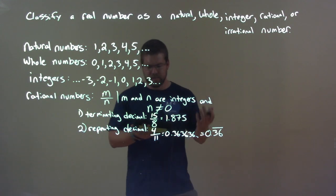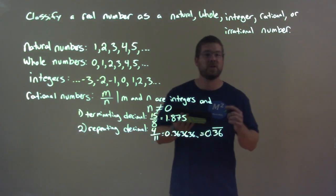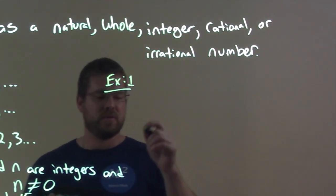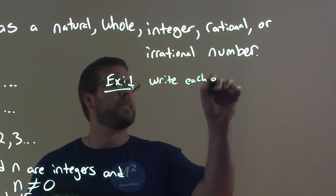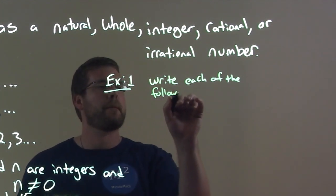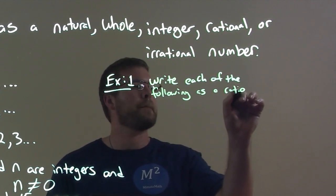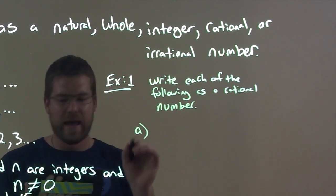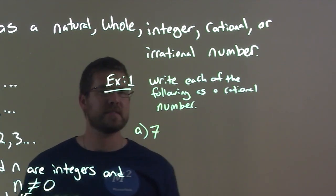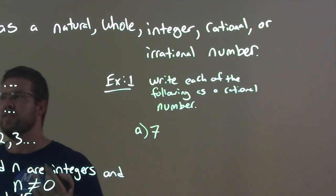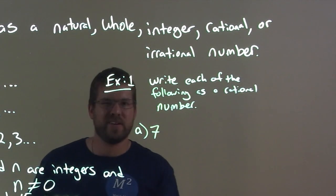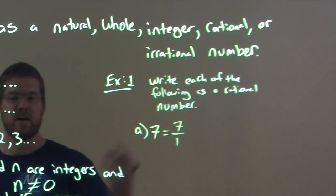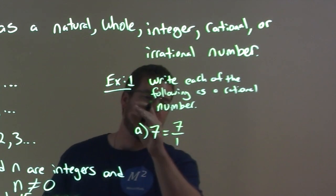Let's do some quick examples. Example 1: write each of the following as a rational number. Part a is 7. Well, 7 is a natural number, but to write it as a rational fraction, we make it 7 over 1. M is 7, N is 1 — both are integers. Simplified, that's just 7. Part b is 0. We can write that as 0 over 1.